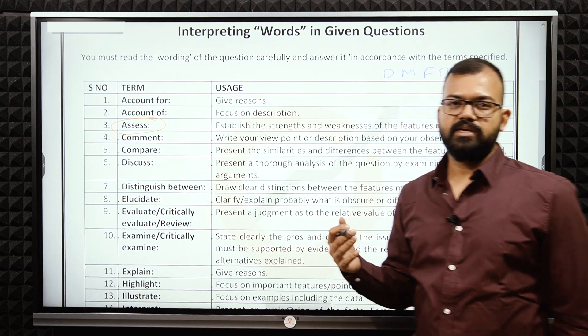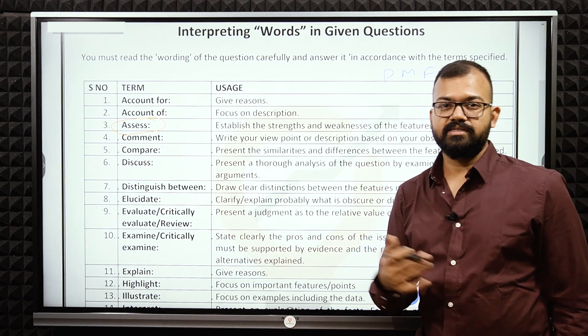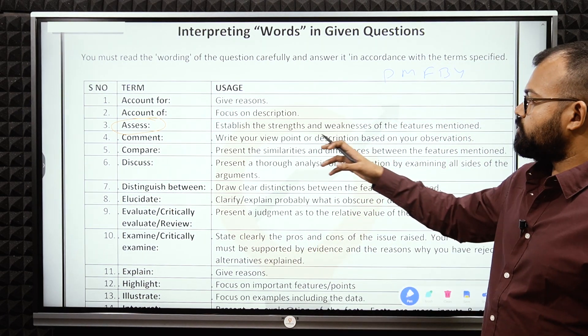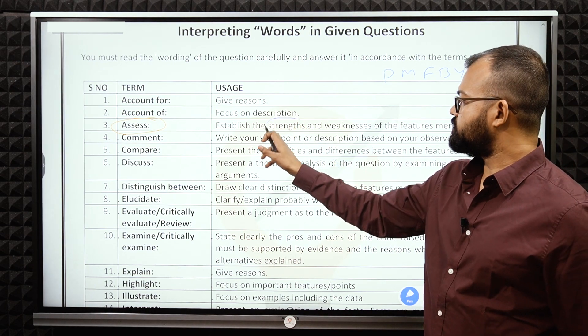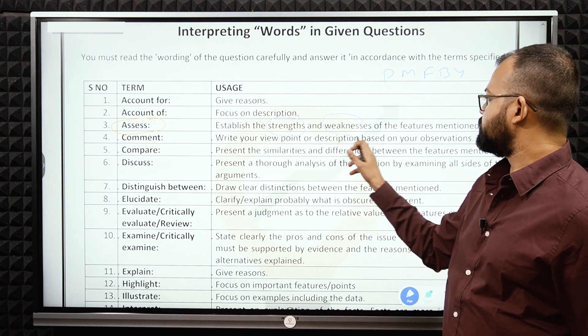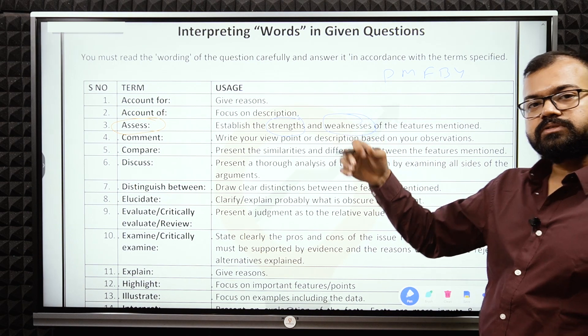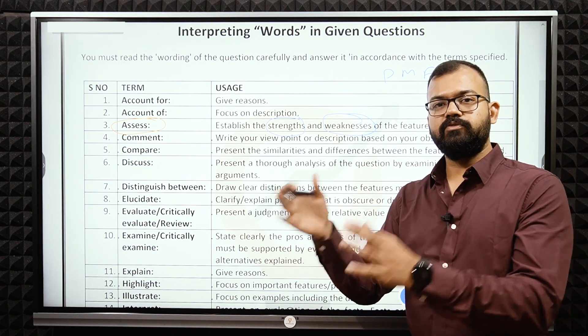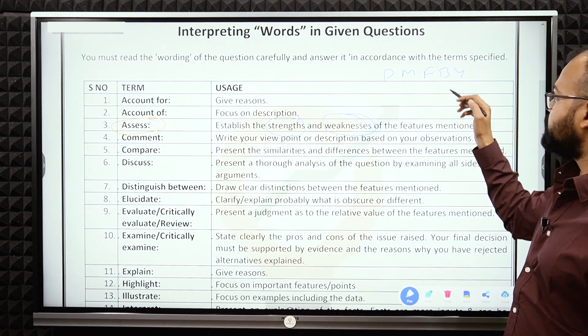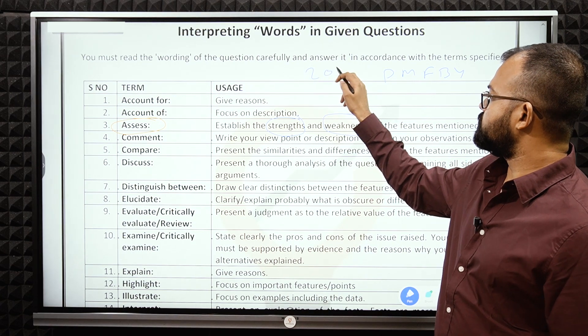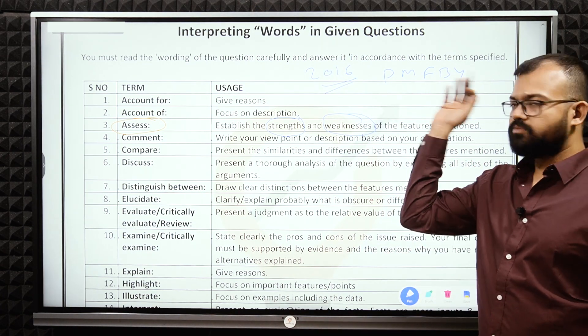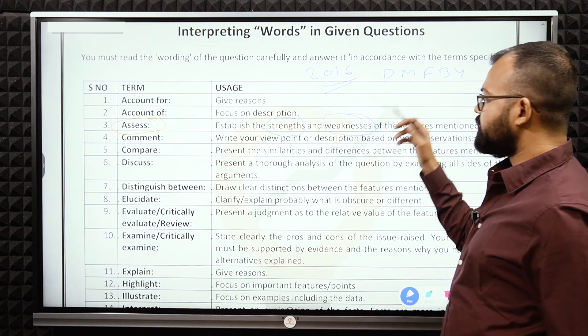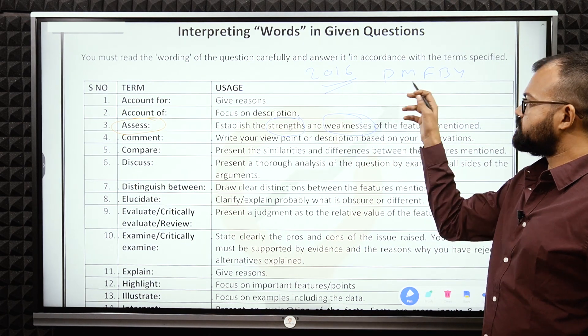If you want to see the strength and the weakness, if the question comes assess the performance of Pradhan Mantri Fasal Bima Yojana since 2016, what do you write? You write strength and weaknesses. What are the strengths? That the premium is very low.